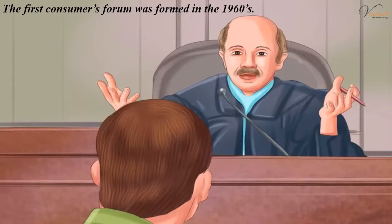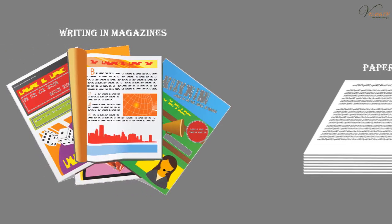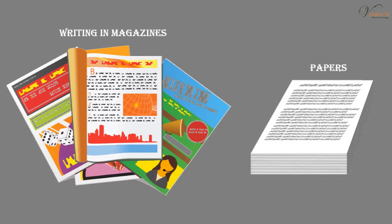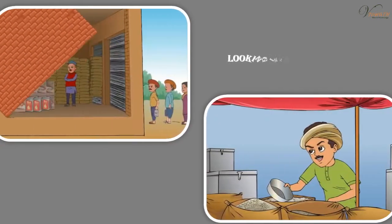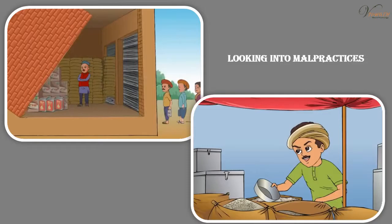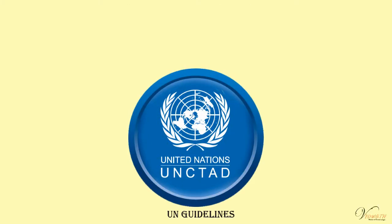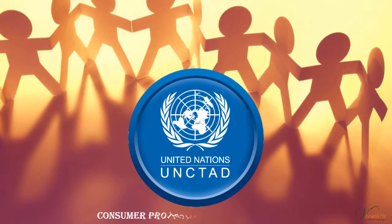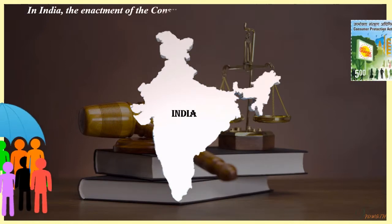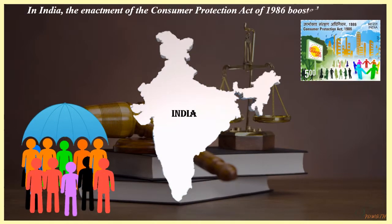Until the 1970s, the role of the consumer movement was limited to exhibiting and writing in magazines and papers. Later, consumer groups started looking into malpractices. The movement got a boost from the UN Guidelines for Consumer Protection formulated in 1985. In India, the enactment of the Consumer Protection Act of 1986 boosted the movement.